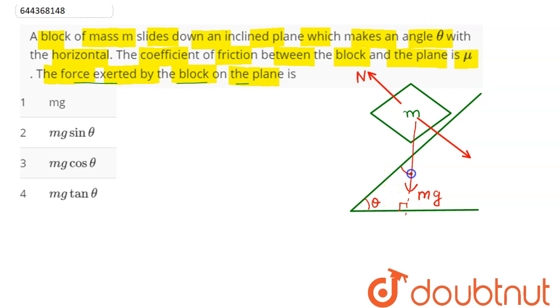This angle is 90, so we can say this angle here is 90 minus theta. Hence this component of weight which is Mg sin of 90 minus theta comes out to be Mg cos theta.